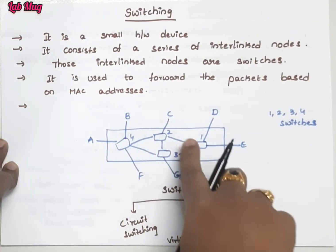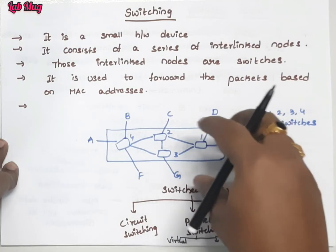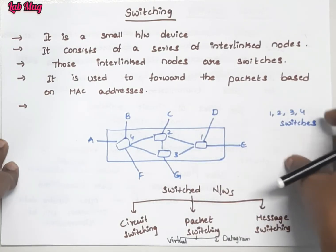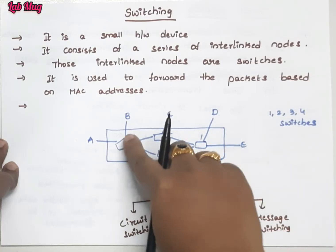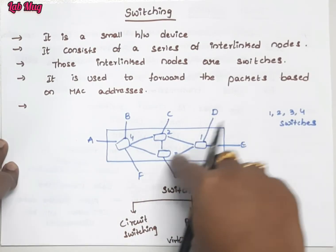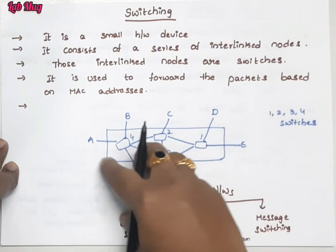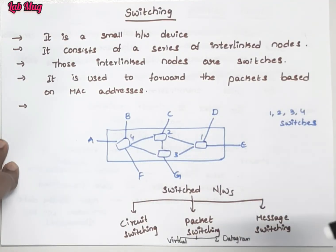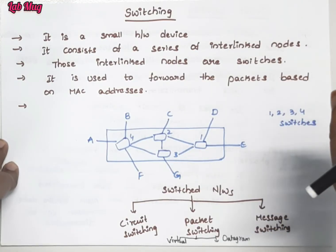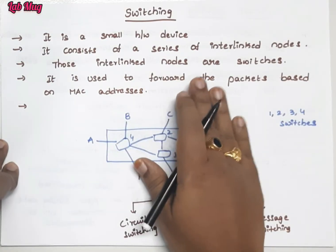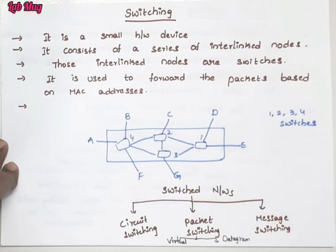For communication between them we use switches - one, two, three, four. These are called switches. These interlinked nodes help us establish connections. Through the switching concept we forward the packets. The complete thing is simply this concept.